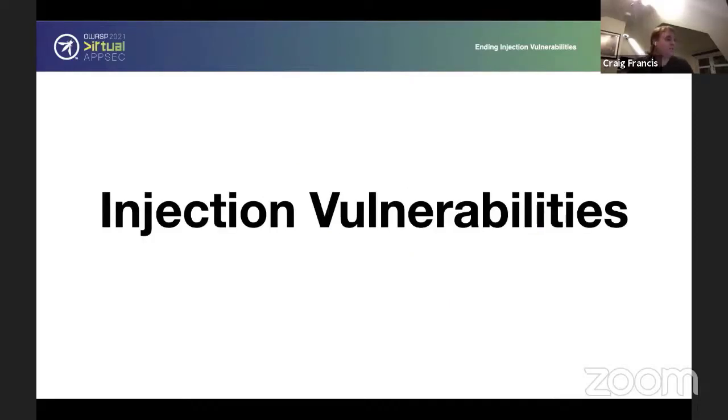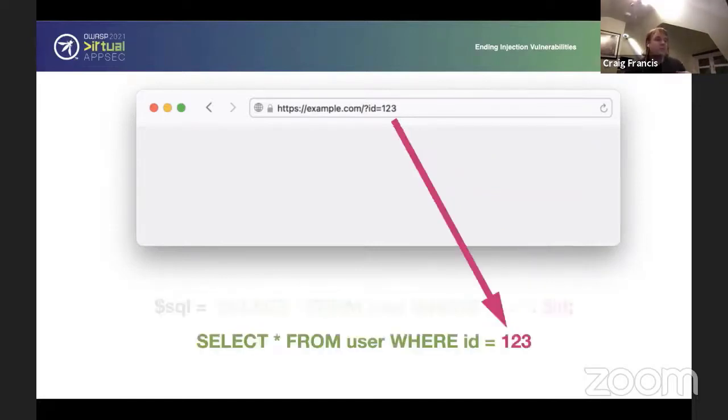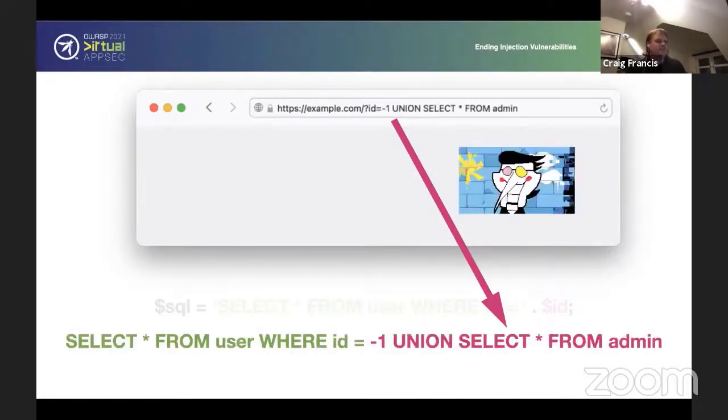So injection vulnerabilities. This is the classic, it's simple example where you've got the SQL query and user data has been appended onto the end of it. The developer thinks this will be how it works. And it's great. It does actually work. But unfortunately, when you have Spamton come along, Spamton will just append this onto the end and it will be minus one to sort of probably kill off anything from the user table. We're not actually going to return anything from there. And we use the union query and we'll then select from the admin table. So now Spamton is looking into the admin table, who probably shouldn't be doing that.